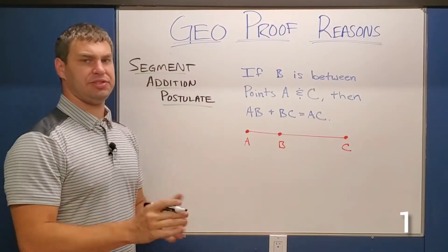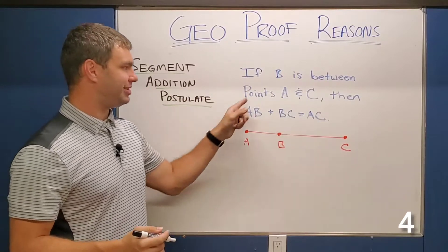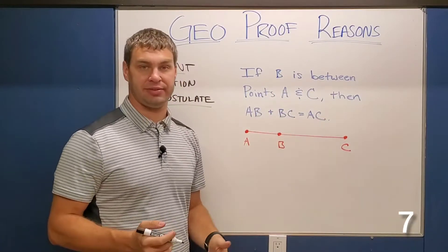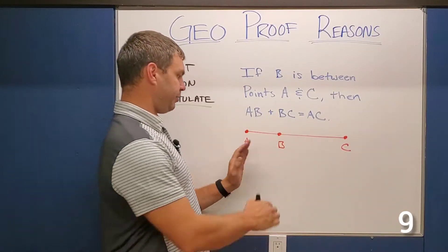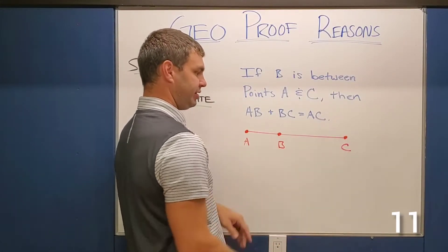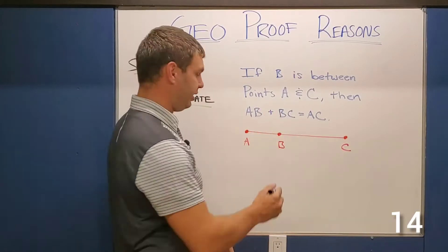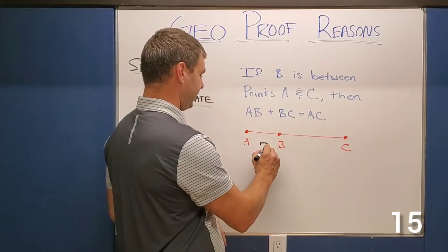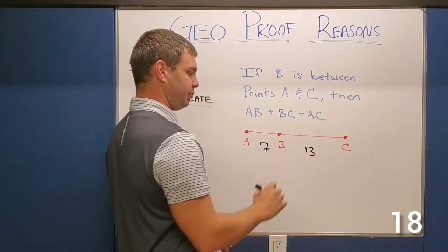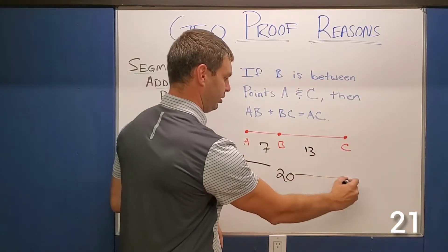A quick definition: segment addition postulate says that if B is between points A and C, then AB plus BC equals AC. In other words, if AB is the first part of the line segment and BC is the second part of the line segment, you can add those together to get the entire thing. So if AB is 7 and BC is 13, AB plus BC — the entire thing — would equal 20.